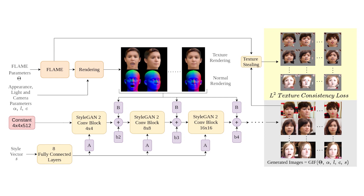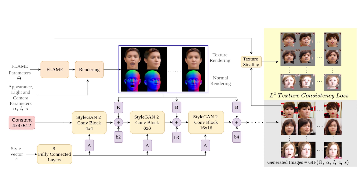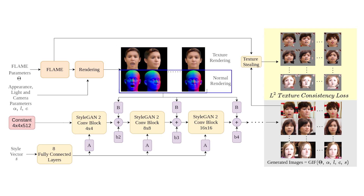Specifically, we condition the generator using renderings of the 3D FLAME model for a given shape, pose, expression, appearance and light parameters. To disambiguate geometry and color, we render the mesh twice: once with facial appearance and lighting, and once with color-coded surface normals.